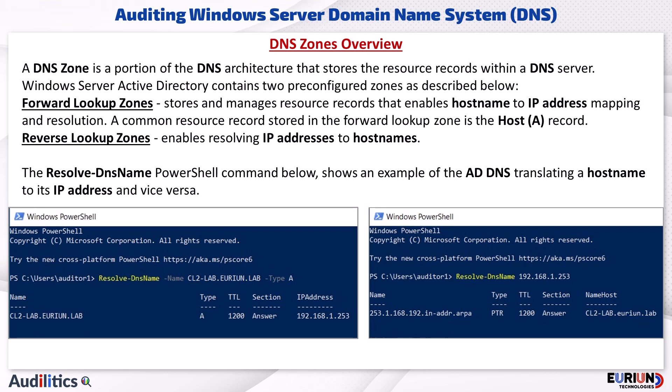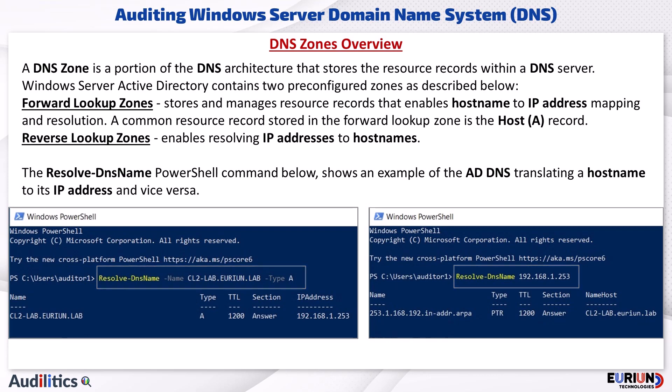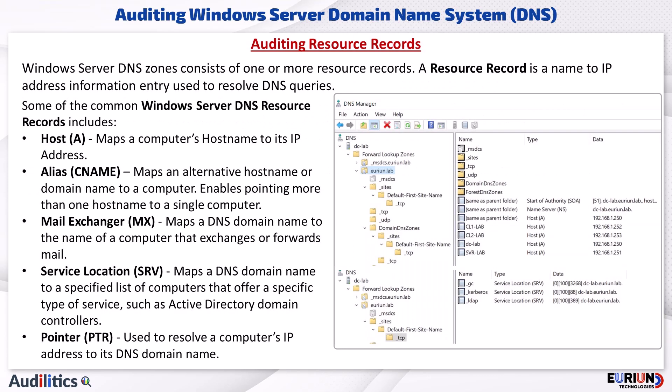The forward lookup zone stores and manages resource records that enable hostname to IP address mapping and resolution. A common resource record stored in the forward lookup zone is the host or A record. The reverse lookup zone enables resolving IP addresses to hostnames. The Resolve-DnsName PowerShell command shows an example of AD DNS translating a hostname to its IP address and vice versa.